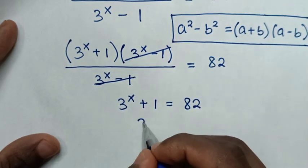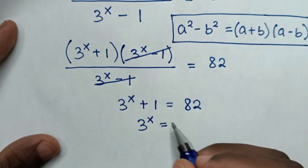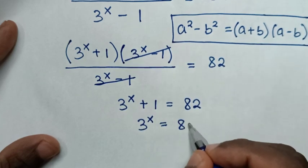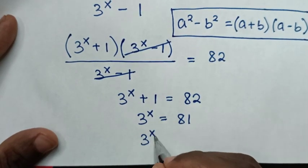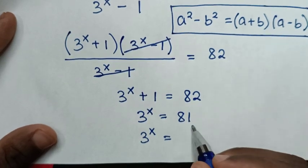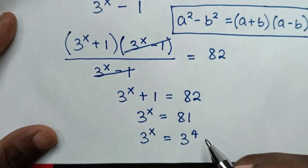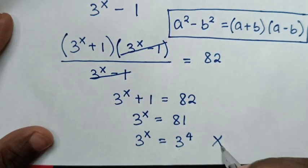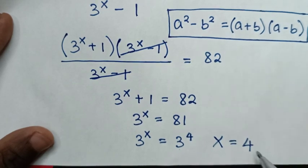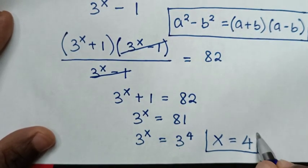Taking 1 to the right side, 3^x equals 81, which is the same as 3^4. Since both sides have the same base, we compare the powers: x equals 4. Therefore, this is our final answer.